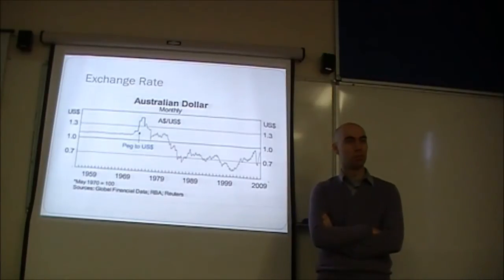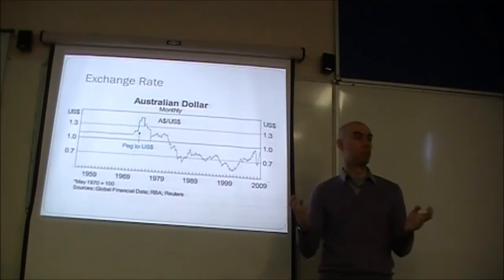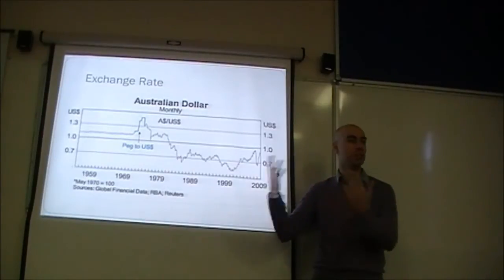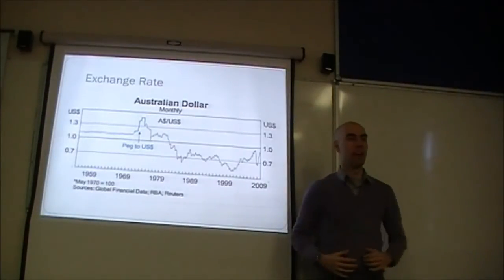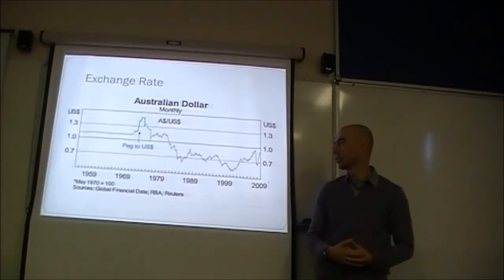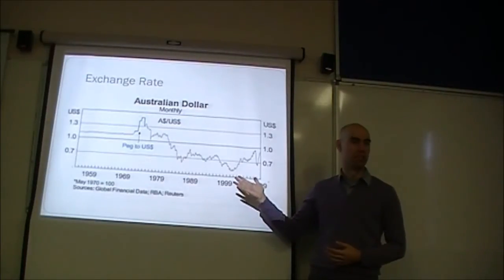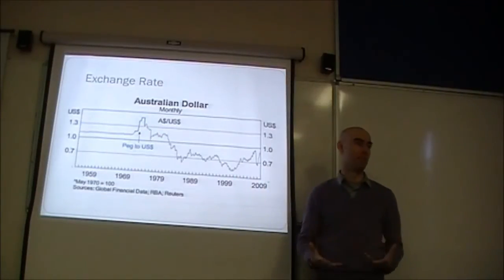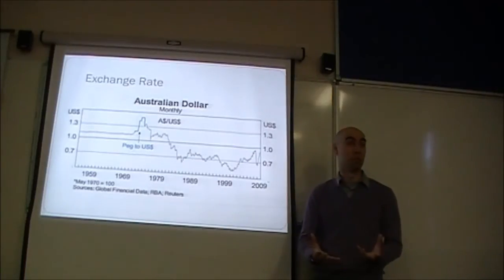Because the RBA controls — they can effectively, metaphorically, print more Australian dollars. They're allowed to do that. They can never run out of Australian dollars. They just issue some more bonds, get some more money, and have some more Australian dollars to exchange for foreign currency. They cannot print US dollars. They can't, legally at least, print US dollars. They can't create them out of thin air. And that's what monetary policy is about.